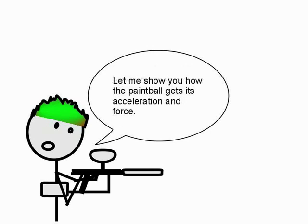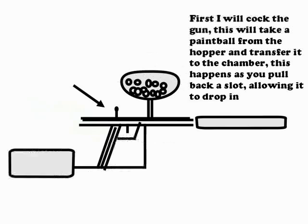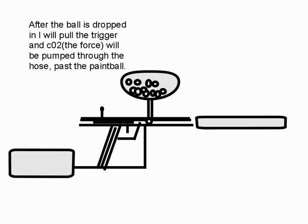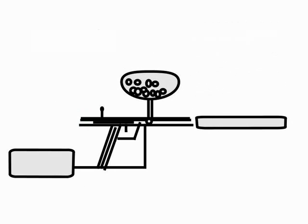Let me show you how the paintball gets its acceleration and force. First, I will cock the gun. This will take the paintball from the hopper and transfer it into the chamber. This happens as you pull back a slot, allowing it to drop in.